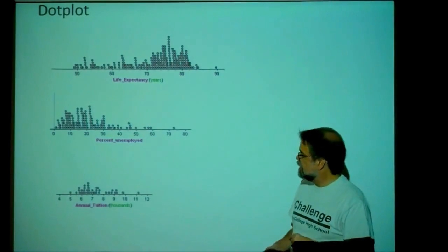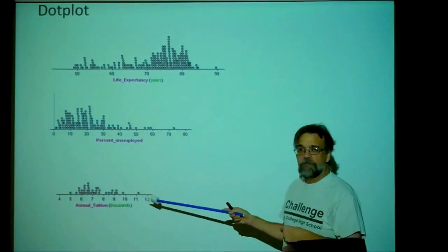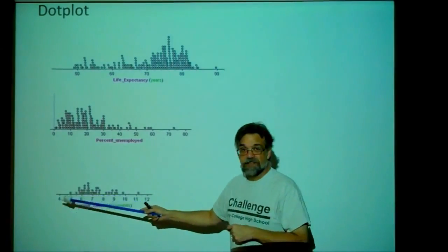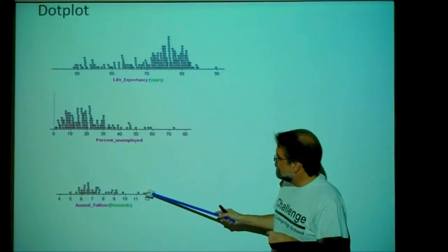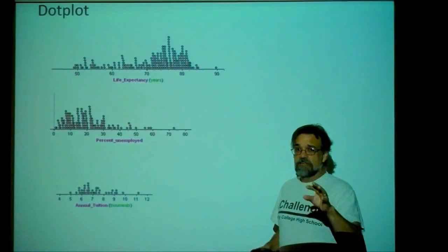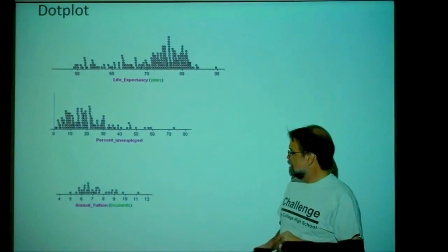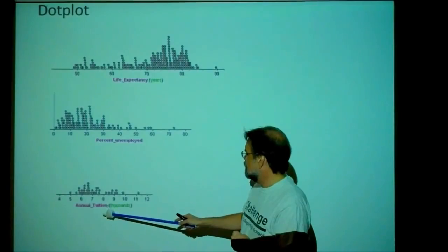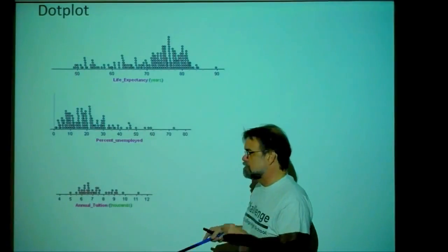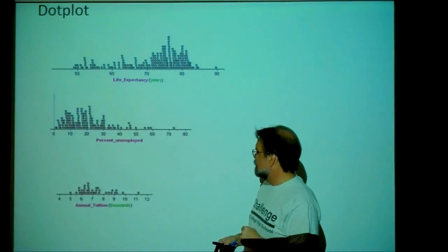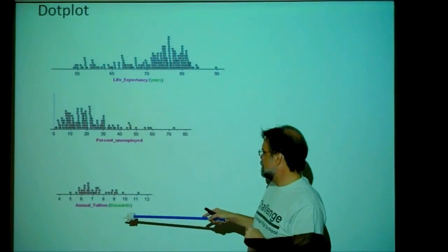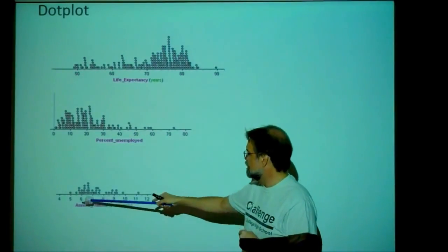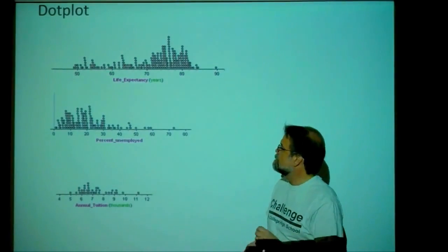Here's another data set — the annual tuition for 38 public universities in Texas, shown in thousands of dollars. The smallest appears to be about $5,000, and the highest is just over $11,000 — this is just tuition, no room and board. The center seems to be about $7,000, with a range of more than $6,000. It also appears to be skewed to the right, but not as heavily as the previous data set — it looks a little more symmetric, though I still wouldn't call it symmetric.